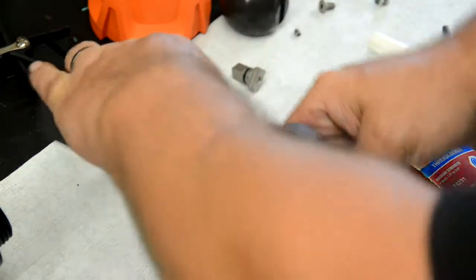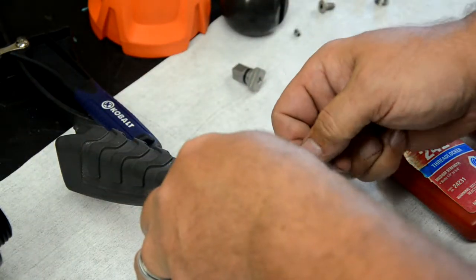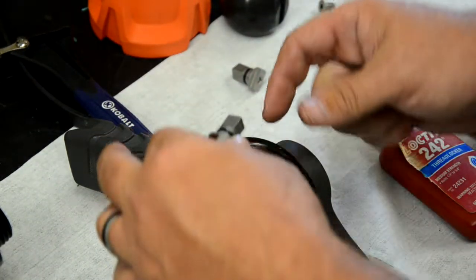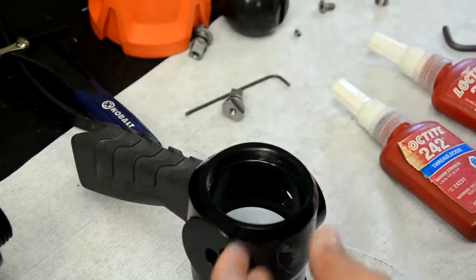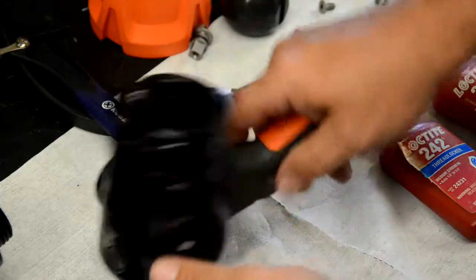The bail handle is now free from the shutoff body and may be cleaned or replaced as needed. At this point, we can reinstall the bail handle in the reverse order of the removal. However, in this video, we're going to continue on and demonstrate how to replace the shutoff seats.